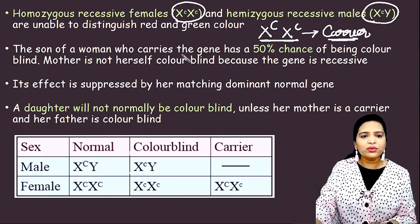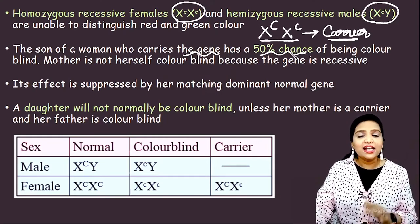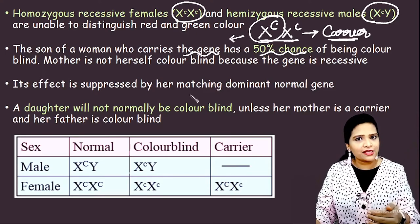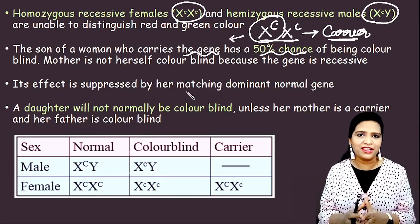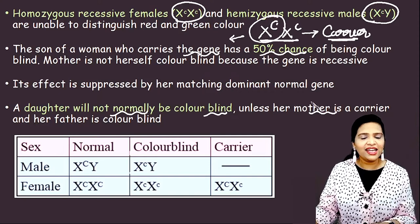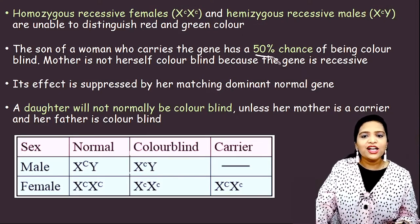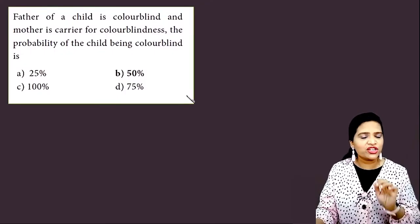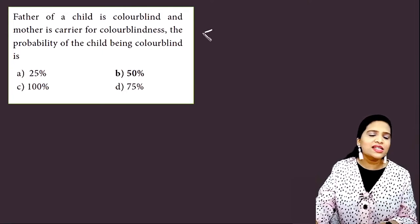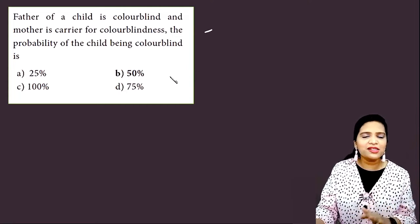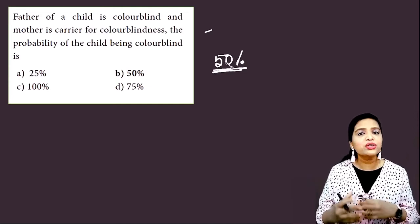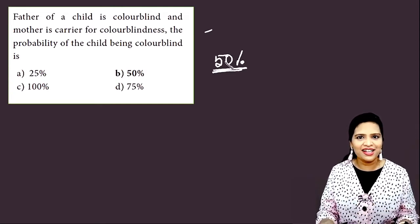The son of a carrier woman has a 50% chance of being colorblind — she can pass the defective gene to 50% of her sons. A daughter will not normally be colorblind unless the mother is a carrier AND the father is a colorblind person. This is a very important point. For example: if the father is colorblind and the mother is a carrier, the probability of the child being colorblind is 50%, because a carrier mother can pass the disease to 50% of her sons.